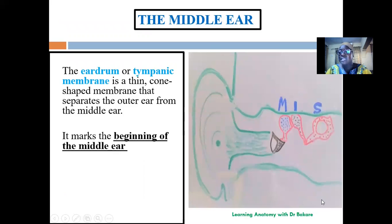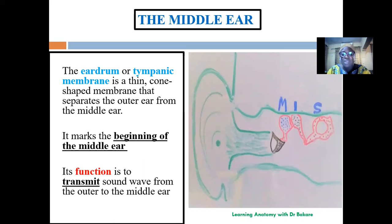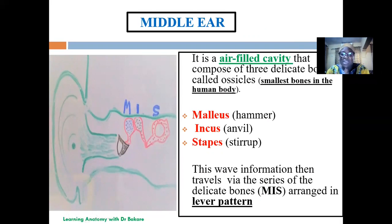The middle ear is the central portion of the ear, located between the outer ear and the inner ear. It is an air-filled cavity. The eardrum is seen at the terminal end of the ear canal, marking the limit of the outer ear. The function of the middle ear is to transmit sound waves from the outer ear to the inner ear. Its major structural components are three ossicles — the smallest bones in the human body — arranged in the form of a lever, attached end to end. These are the malleus, the incus, and the stapes.